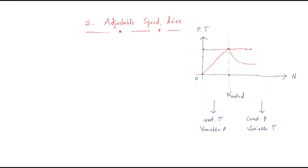In an adjustable speed drive, we can adjust the speed. If you draw a graph with power and torque on the y-axis and speed on the x-axis, look at the red line — up to one particular point it increases, and after that it levels off. That particular point is known as the rated speed.